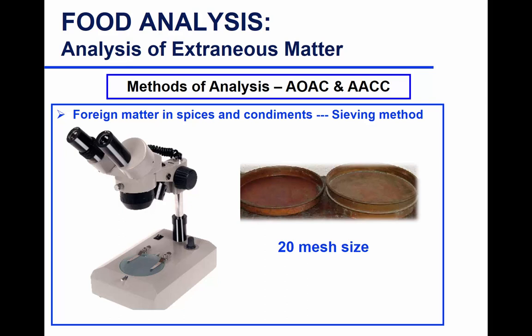For powders, specifically for spices, there is a sieving method: you run the spice through a 20-mesh sieve, take what remains on the sieve, put it under the microscope, and count — that's how you get your count.